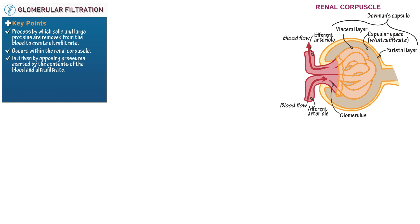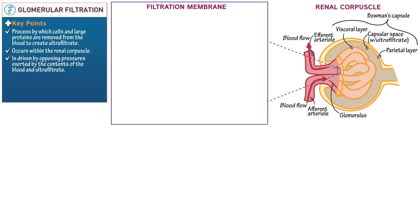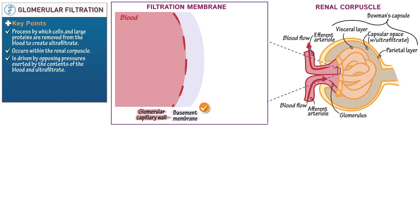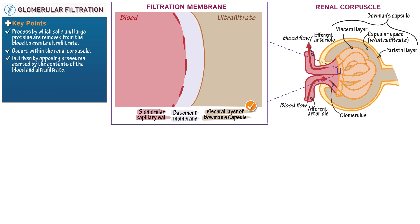Indicate that the capsular space contains ultrafiltrate. To visualize the creation of ultrafiltrate, let's zoom in on the filtration membrane. Show that it comprises the glomerular capillary wall, basement membrane, and visceral layer of Bowman's capsule. The filtration membrane is selectively permeable — only small and positively charged molecules pass freely. So indicate fenestrations, also referred to as pores, within the endothelium of the capillary wall.